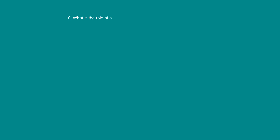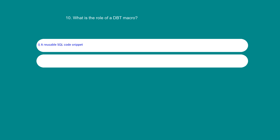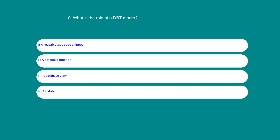What is the role of a dbt macro? Option 1: A reusable SQL code snippet. Option 2: A database function. Option 3: A database view. Option 4: A database table. The answer is 1: A reusable SQL code snippet.